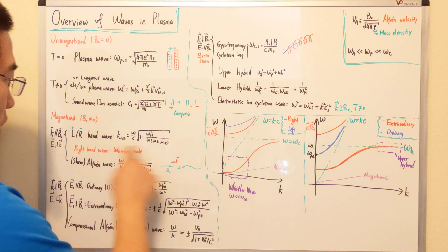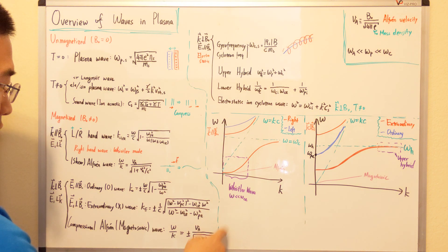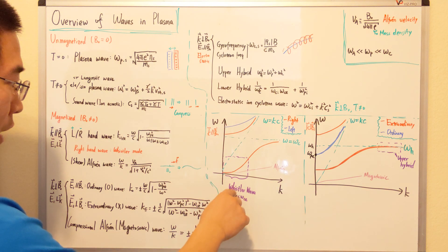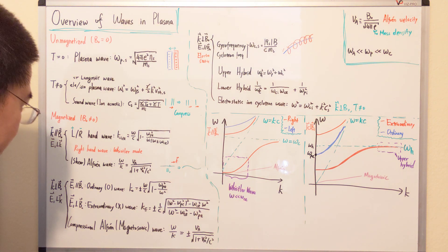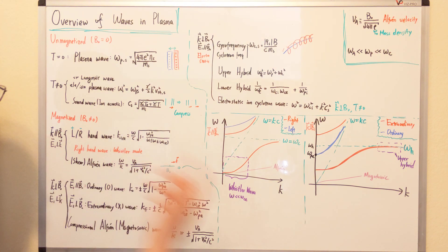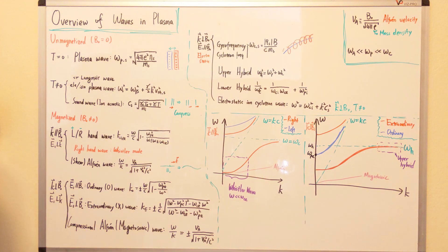For low frequency, where omega is much less than omega c e electron cyclotron frequency, we have a visceral wave for the right-handed wave. For low frequency case, we have a sheer Alfven wave or Alfven wave. It's just corresponding to this purple one.